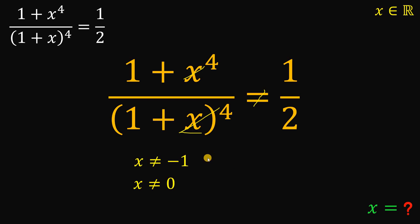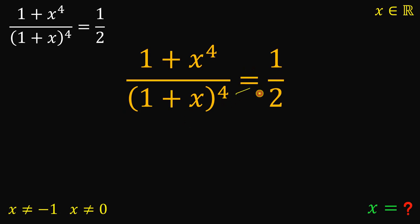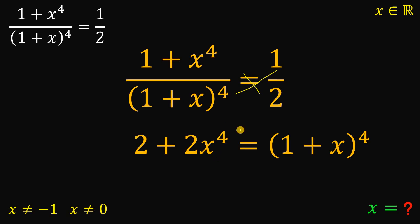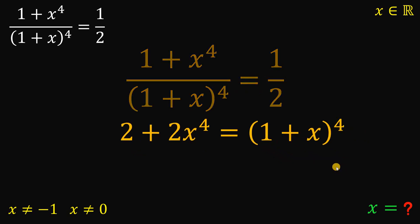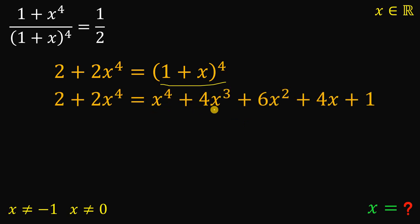Now let's set aside those restrictions. From here, what we're going to do is cross multiplication. So we have 2 plus 2 times x raised to the fourth power equals 1 plus x raised to the fourth power. Now let's focus on this result, and what we're going to do is expand the right-hand side — 1 plus x raised to the fourth power. Using Pascal's triangle, if we expand this, we get x to the fourth plus 4x cubed plus 6x squared plus 4x plus 1.